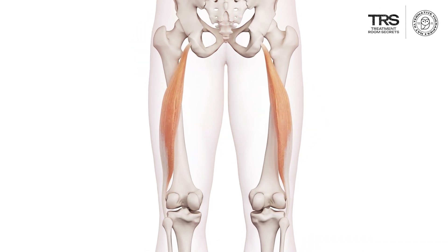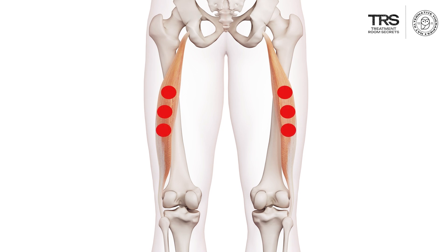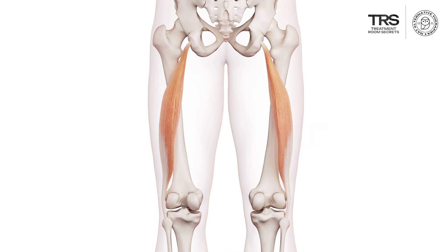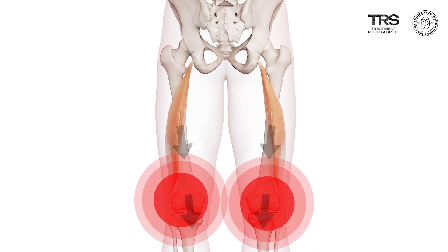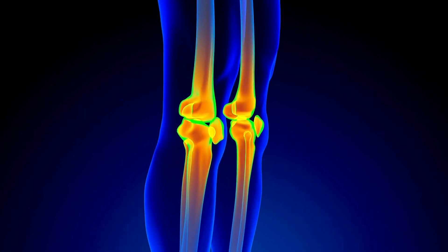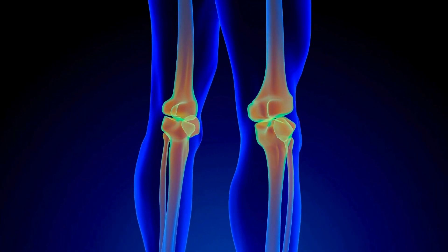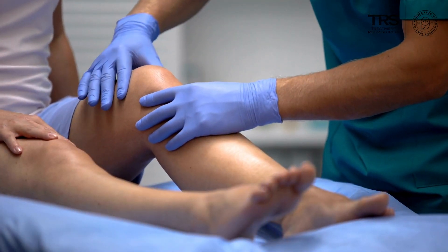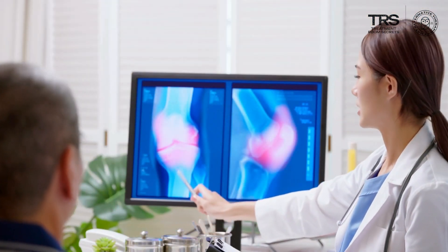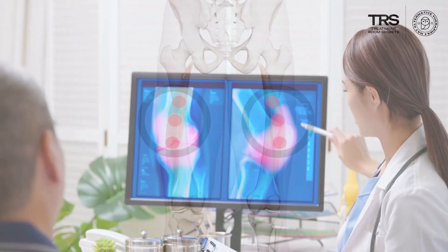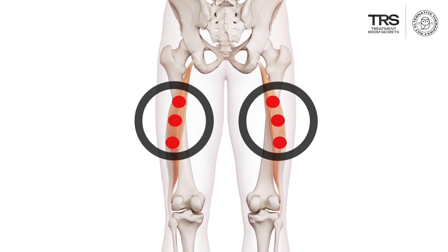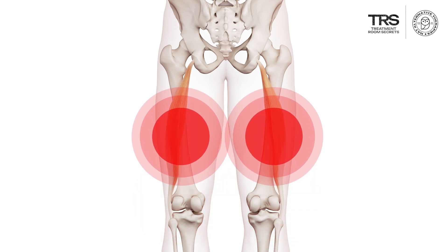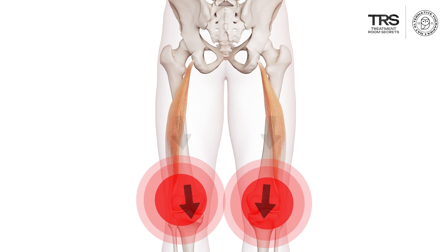Trigger points in the biceps femoris occur in the center part of the muscle, clustered in this area here. This pain is referred downwards — you would feel it behind the back of the knee. Many people have knee pain at the back of the knee, and even after MRIs and thorough examination the doctor can't find much wrong with the knee. Look up here, at the biceps femoris — this is a potent cause of pain at the back of the knee. It may also cause pain running up the back of the thigh, but the back of the knee is where it focuses.